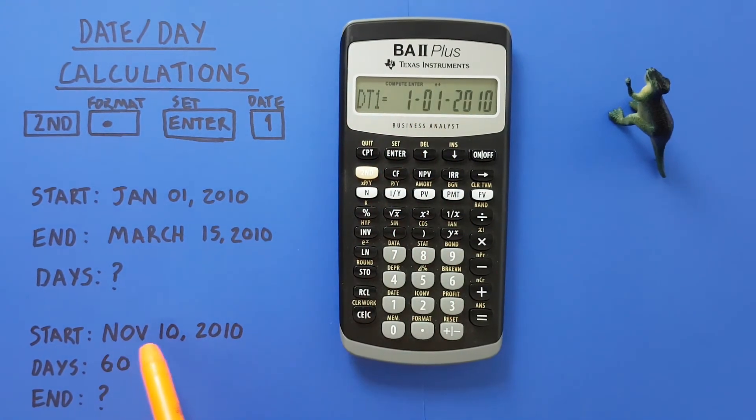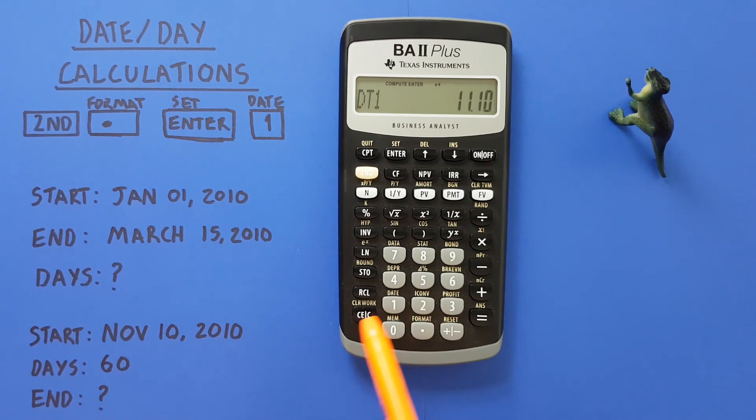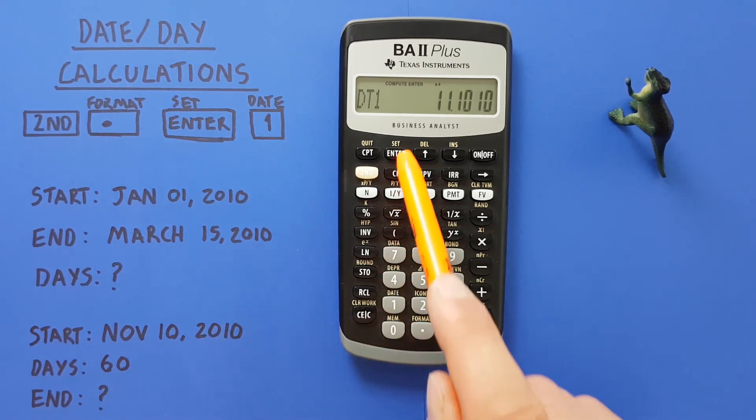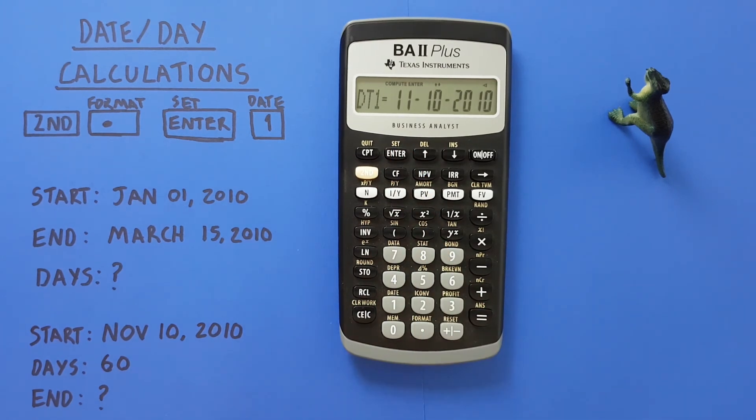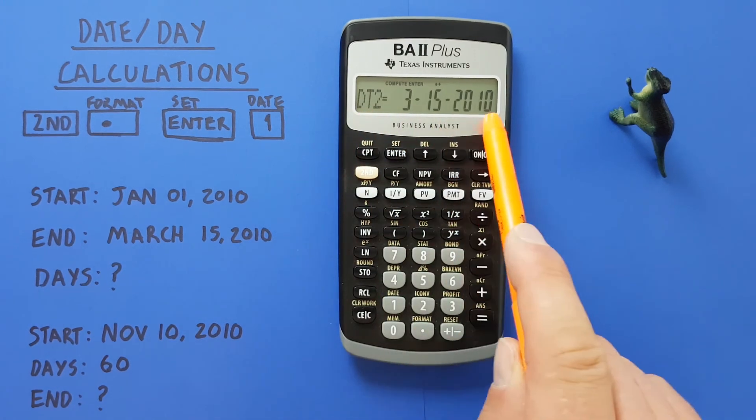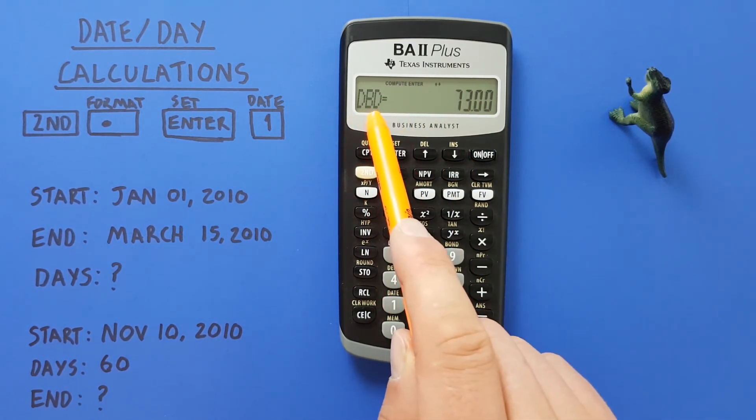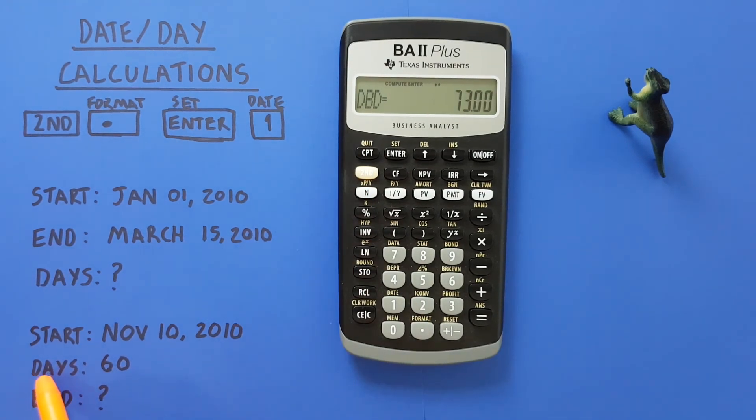For that, again we go back into our date menu, so second one, and then we enter our start date or date one, which is November 10th, 2010. So November is the 11th month, decimal, then the 10th day, and then 10 again for 2010. Press enter to confirm that. If we scroll down one, this is our date two. We don't have this, so we scroll past it to our DBD and we know we have 60 days here, so we enter 60, press enter.